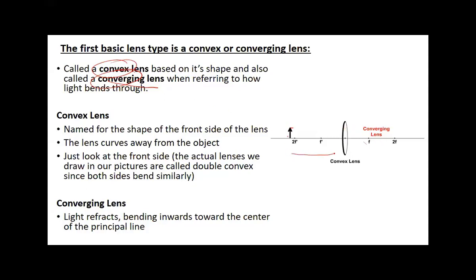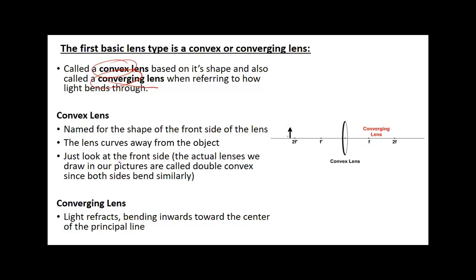Some of you may have used a magnifying glass to start a piece of black paper on fire. The magnifying glass is what's in the back of my head when I think about converging versus diverging. A magnifying glass focuses and converges the light onto a spot. That converged light becomes very strong and heats up paper. So when I look at this lens shape, I remember the magnifying glass and know it converges light — it's a converging lens because it sends light toward the principal line.